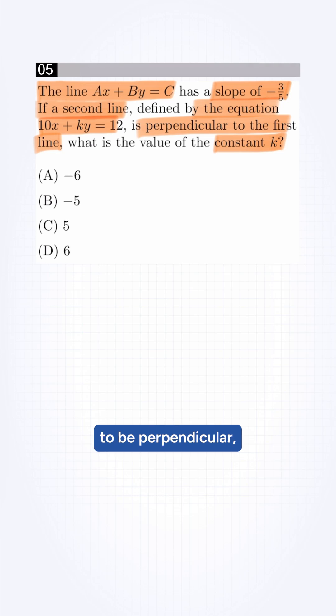So here, for two lines to be perpendicular, the slope must be a negative reciprocal of each other. For the first line, slope m1 equals minus 3 by 5, which is already given.